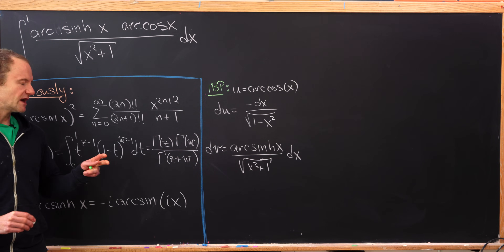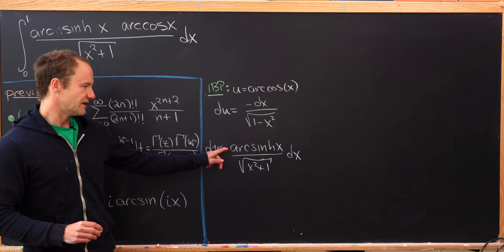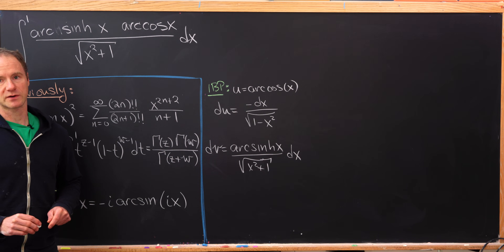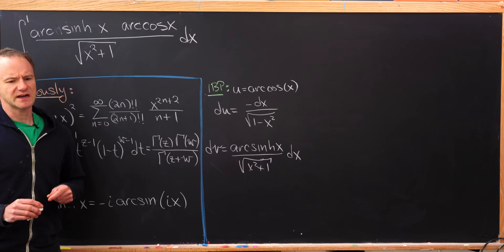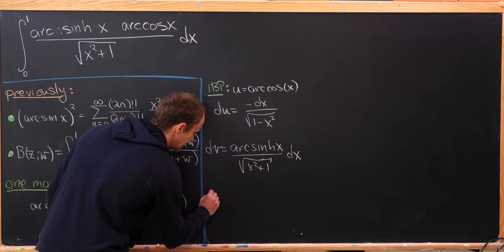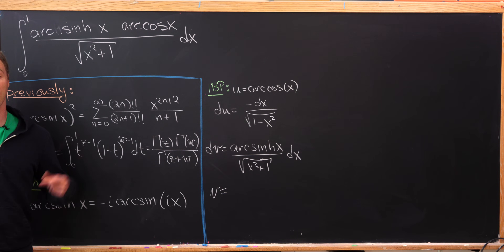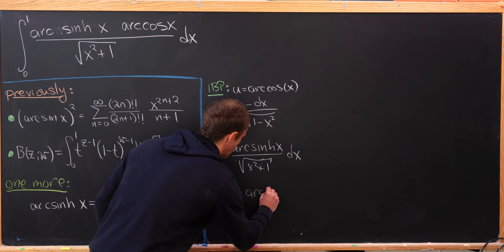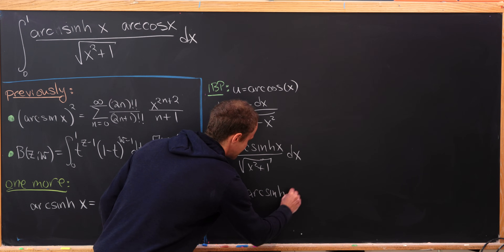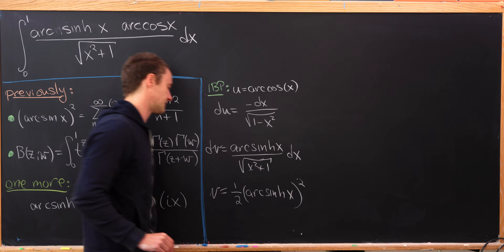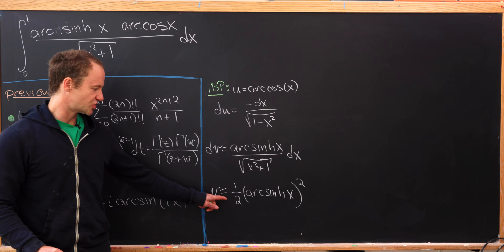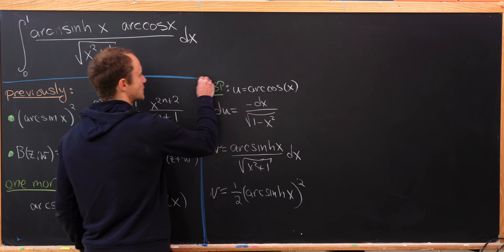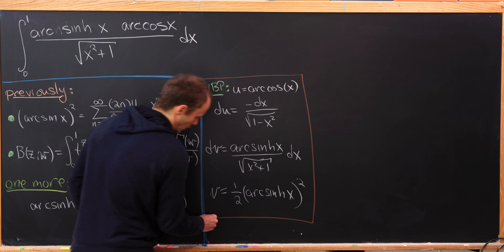What's great is that the derivative of the inverse hyperbolic sine function is 1 over the square root of x squared plus 1, so via a substitution it's easy to find the antiderivative. We get v equals one-half times the arc hyperbolic sine of x, all squared. If you take the derivative of v by the chain rule, you get exactly what we have for dv.